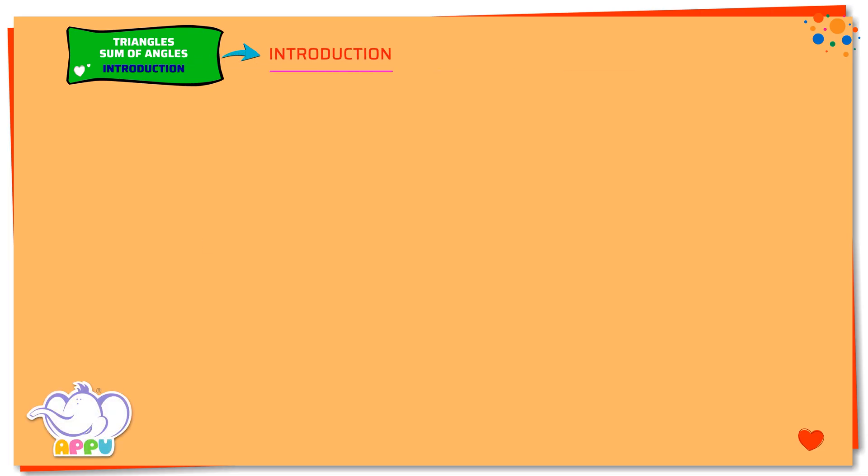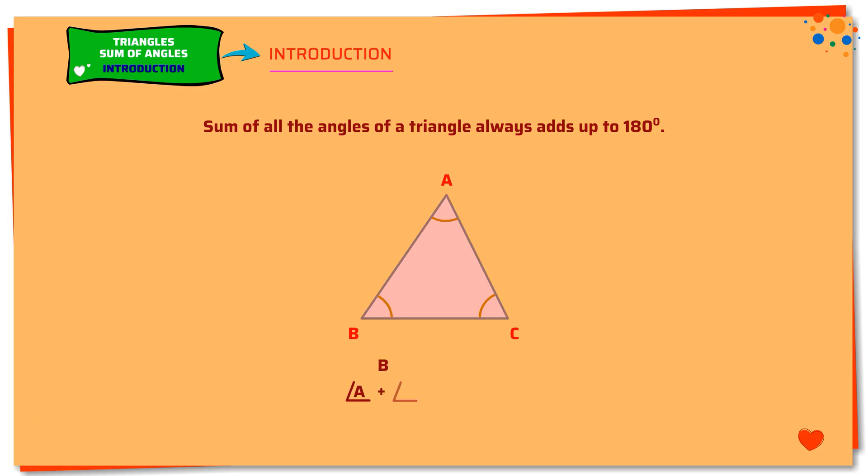Introduction: Sum of all the angles of a triangle always adds up to 180 degrees. In this triangle ABC, angle A plus angle B plus angle C equals 180 degrees.